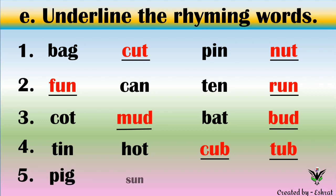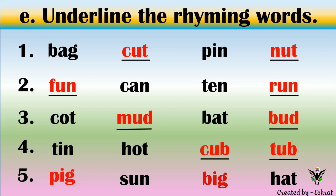P-I-G, pig. S-U-N, sun. B-I-G, big. H-A-T, hat. Which two words rhyme? P-I-G, pig and B-I-G, big. Pig, big. In your book, similarly find the rhyming pairs.